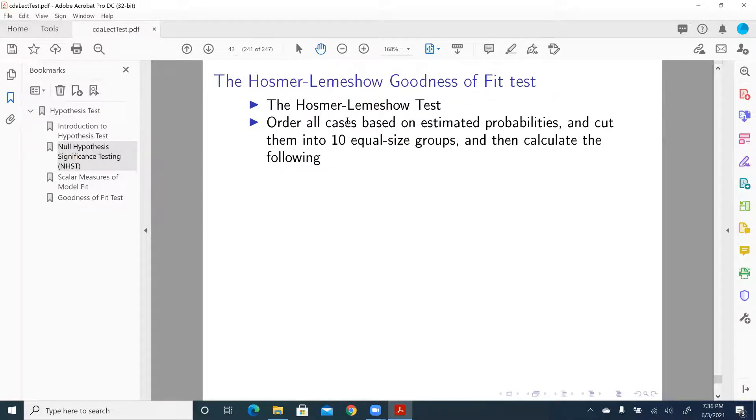So basically what we're going to do is order all cases based on estimated probabilities. After running binary regression model, we can calculate the probability. We're going to order all the probabilities and cut them into 10 equal size groups, from the lowest to highest. It does not have to be 10, but 10 is probably optimal. And the total number sometimes is uncertain, and that is a caveat, actually one criticism on this test.